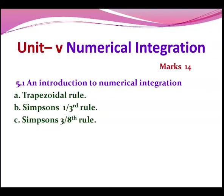Unit five is numerical integration, worth 14 marks. There are three subtopics: the trapezoid rule, Simpson's one-third rule, and Simpson's three-eighths rule.